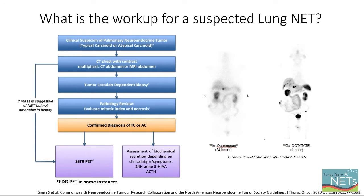So what is the standard workup for a suspected lung neuroendocrine tumor? Imaging is key — both CT imaging of the chest, but also ensuring that we're imaging the liver with a multiphasic CT abdomen or MRI abdomen. After reviewing the imaging, we choose what would be the best and safest place to biopsy. Next, there's a pathology review. And if we have a suspicion that this is a carcinoid tumor based on the biopsy specimen, there is an additional imaging study called somatostatin receptor imaging. We used to perform octreoscan, which lights up neuroendocrine tumors, but it's a very fuzzy, low-resolution scan. Now there are somatostatin receptor PETs, and we have an example of the 68-gallium dotatate PET showing the liver metastases much more clearly in the same patient.